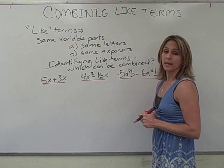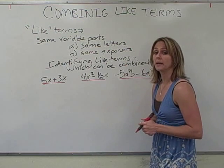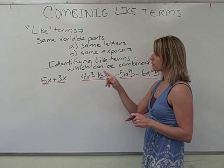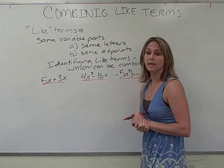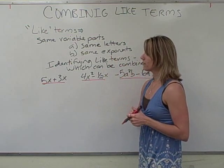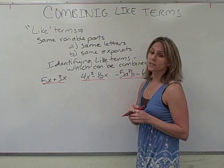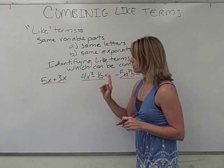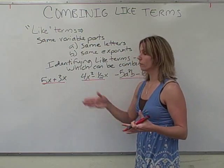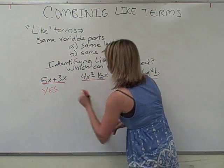So let's identify some like terms. I have three examples here, and our job is to find out which of those can be combined. So we look at the first two. We have 5X plus 3X. The question is, can we combine those terms? So we ask ourselves, do they have the same letters? They both have X. And do those X's have the same exponents? And hopefully you recall that right now, these two X's both have an exponent of 1. So yes, these can be combined.